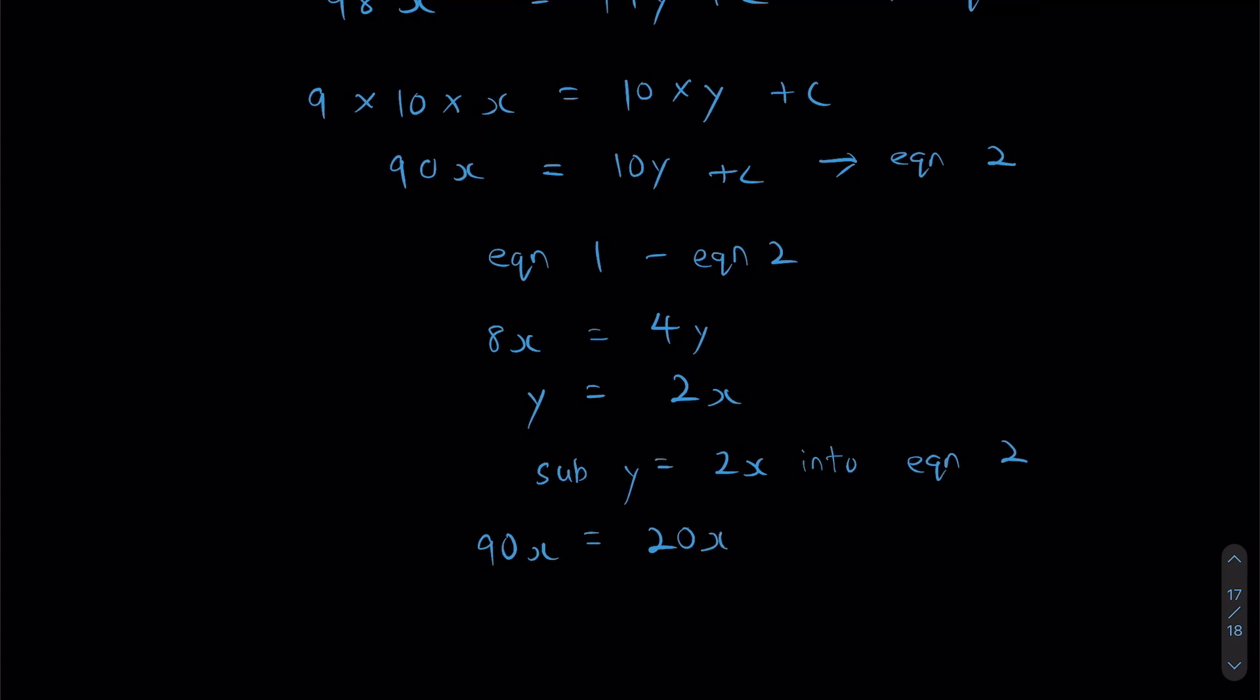That means C is going to be equal to 70X. So now I have X, I have Y equals to 2X, and I have C equals to 70X. I have effectively expressed everything in terms of X, which is going to be really helpful for my calculations.